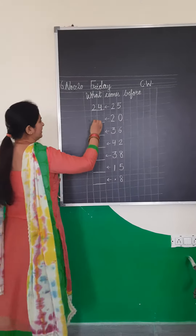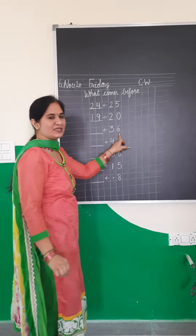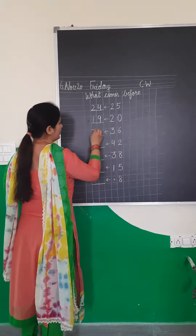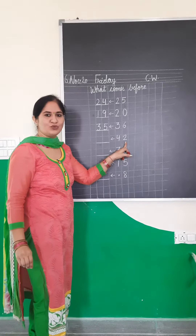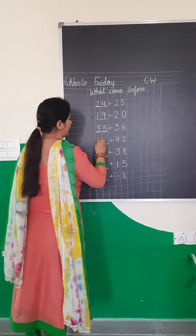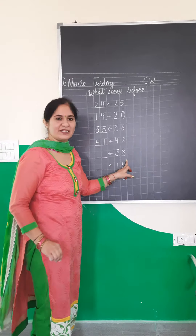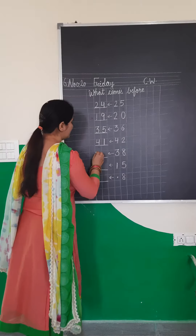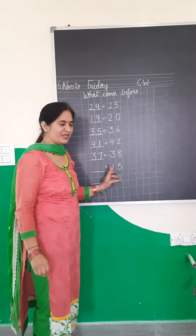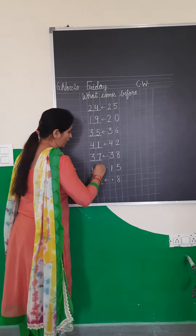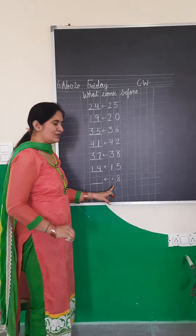What comes before 20? 19. What comes before 36? 35. What comes before 42? 41. What comes before 38? 37. What comes before 15? 14.